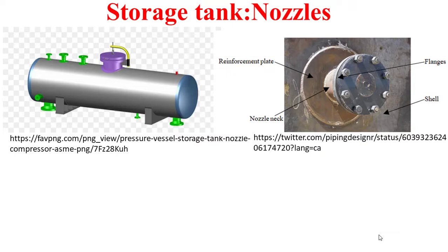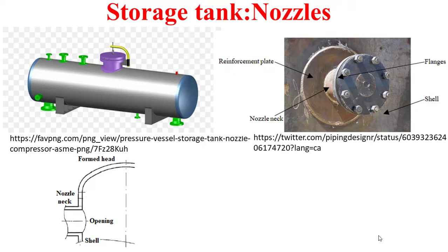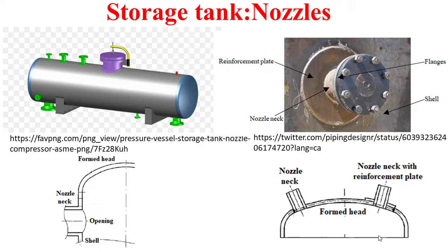A nozzle consists of a neck, a flange, and possibly a reinforcement plate for reasons of resistance. Nozzles can be applied on the shell, as indicated in gray in the left picture, or on the formed head, indicated in blue. On the bottom left the nozzle is on the shell, and on the bottom right two nozzles are carried out on the formed head. A nozzle neck can be simple or with a reinforcement plate.